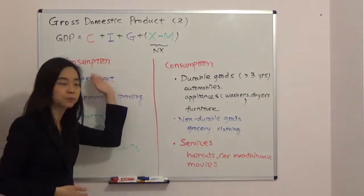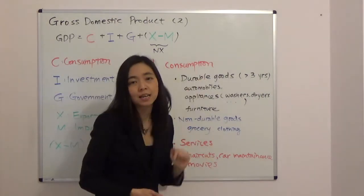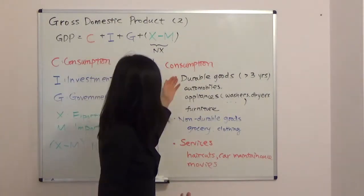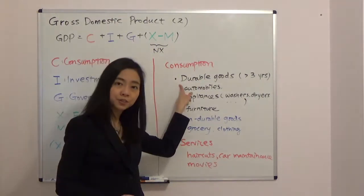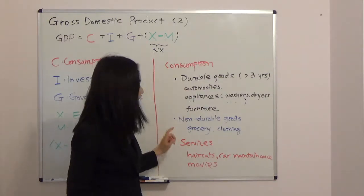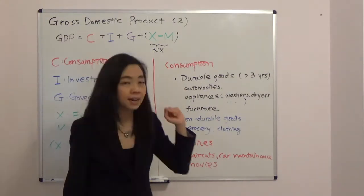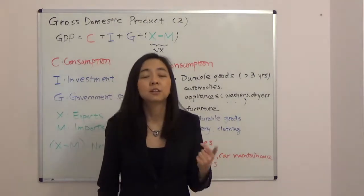Consumption contains three items: durable goods, non-durable goods, and services. Typically, durable goods will last for more than three years.